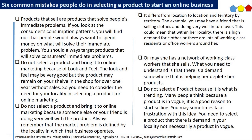Mistake 6: Do not select a product because that is what is trending. Many people think because a product is in vogue, it is a good reason to start selling. You may sometimes face frustration with this idea. You need to select a product that has demand in your locality, not necessarily a product in vogue. Products in vogue may sell well in one locality and may not sell well in another. You need to do trend research before you start selling a product that is in vogue.